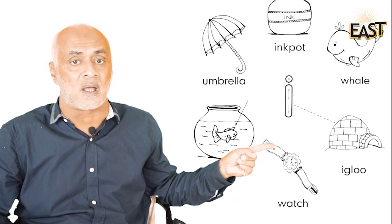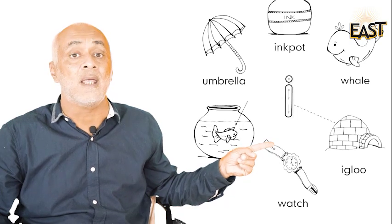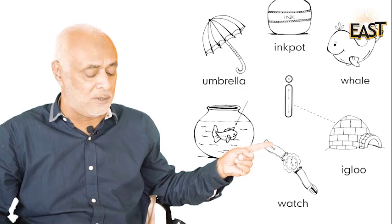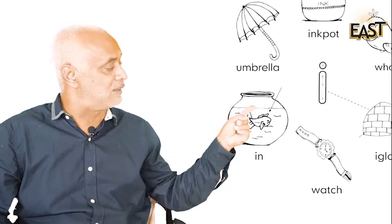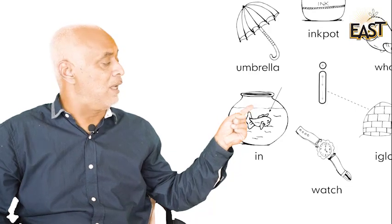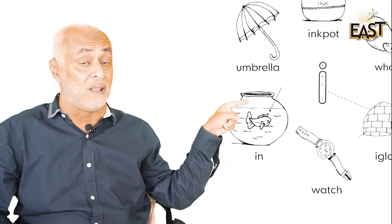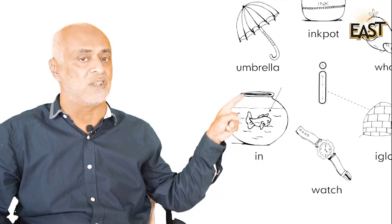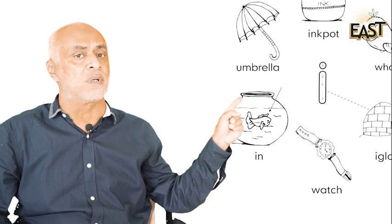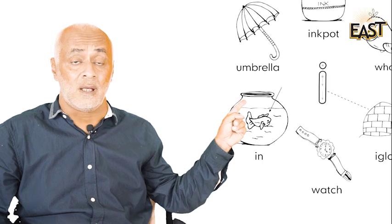Aap ka kya khiyal hai? What is the beginning sound? Very good! And what is this? In, in, in — fish is in the bowl, fish is in the bowl. The beginning sound of 'in' is 'ee.' Ee!